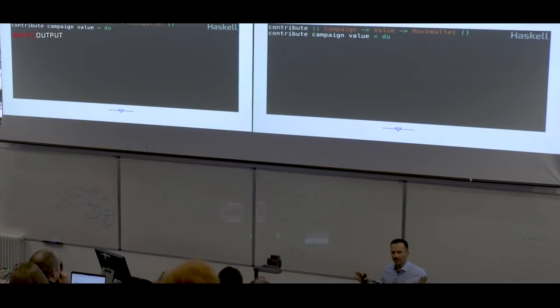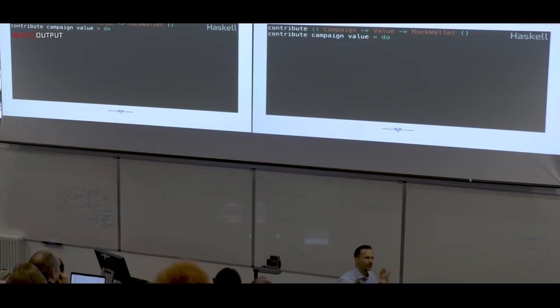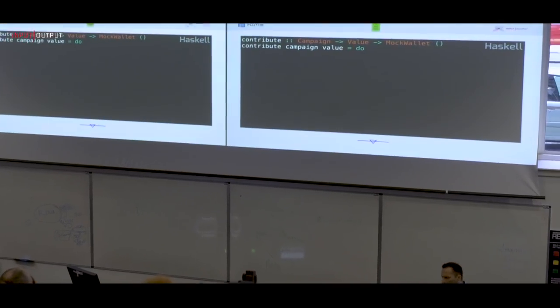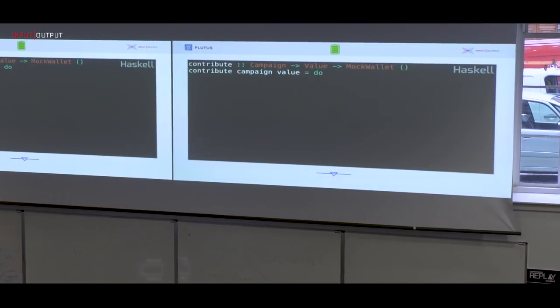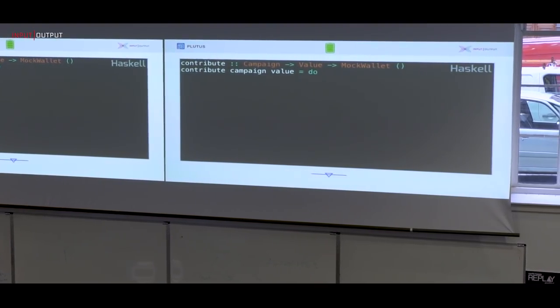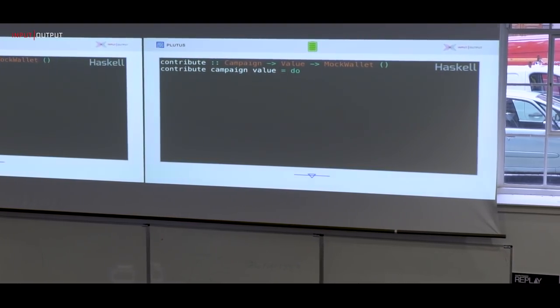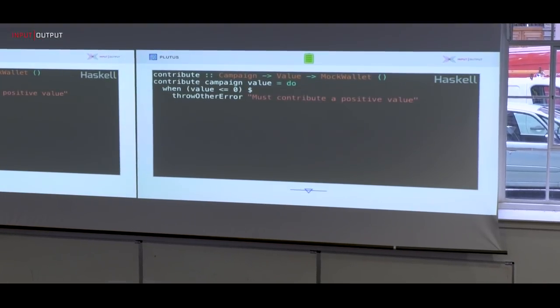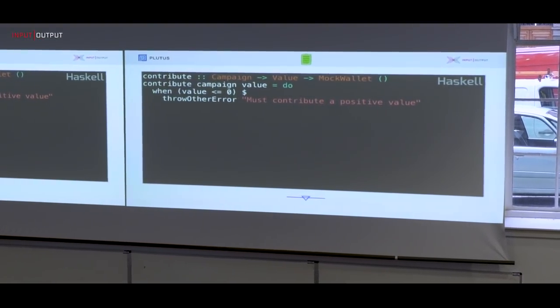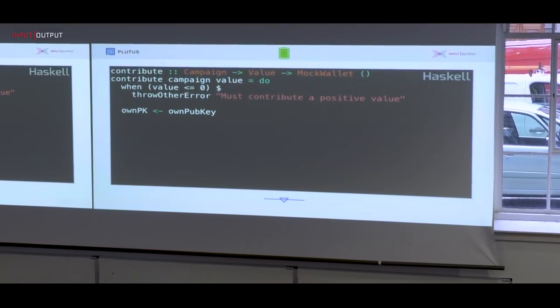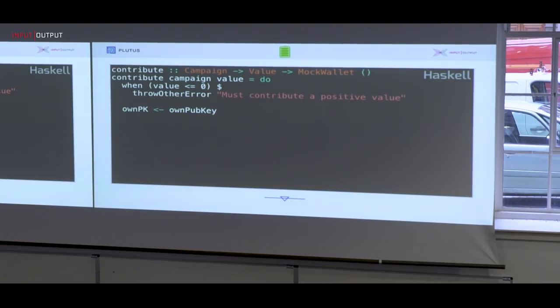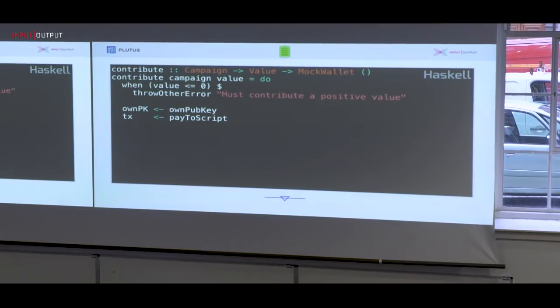Now, let me give you a slight idea of how this looks like. I appreciate not everybody is a Haskell programmer, so I won't go into great detail here. I just want to give you an outline of what such a contract looks like. And I'm just going to look at one function, namely, how can I contribute to this crowdfunding campaign? That's a function contribute. It gets a campaign as an argument and how much you want to contribute. Then we should check that you actually want to contribute a positive amount. And then this code, this is off-chain code. You get your public key from your wallet. Because we have to be able to refund to something in case you get a refund.